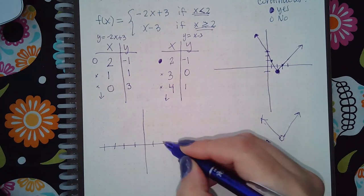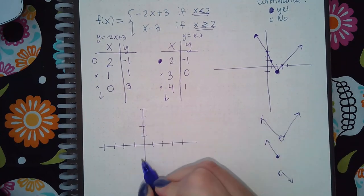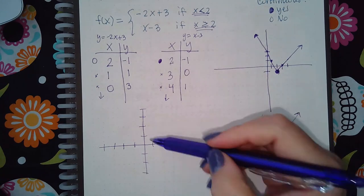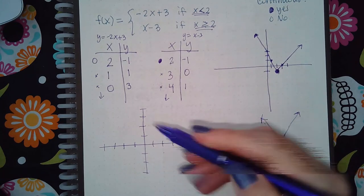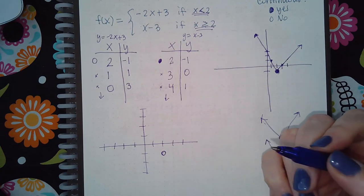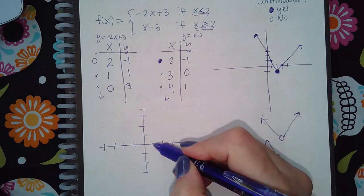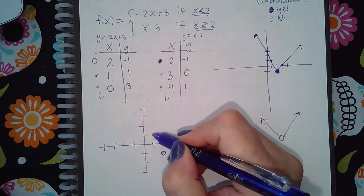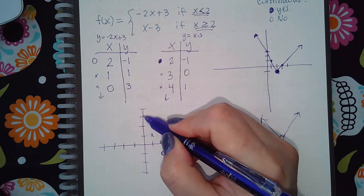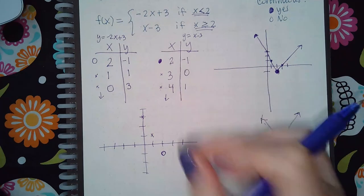So if I go to 2 and negative 1, I've got to use an open dot to plot that point in the computer. Then I'm gonna go to 1 and 1 and do a regular point, then I'm gonna go to 0 and 3 and do a regular point. Then I'm gonna come over here and plot these.